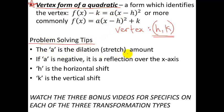Here are the problem-solving tips. The value a is the dilation amount: if a is larger than 1, the graph is stretched out; if smaller than 1, it's shrunken. If a is negative, you've reflected over the x-axis. h and k are the horizontal and vertical shifts, telling you where the new vertex is. Vertex form is the best and easiest form for graphing a quadratic — you know the vertex, plot it, and use the stretch factor with the shortcut: over 1 up 1, over 2 up 4, over 3 up 9, scaled by a.